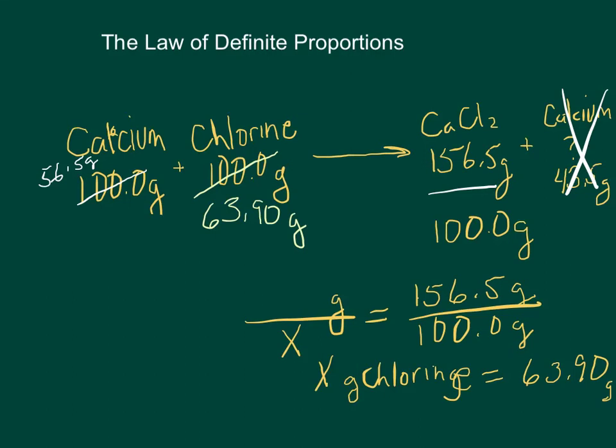This time, I'm going to use the calcium's number for the new perfect formula. And cross-multiply it. So, 56.5 times 100 divided by 156.5 is 36.1. So, that's how many grams of calcium I should start with to make 100 grams of calcium chloride.